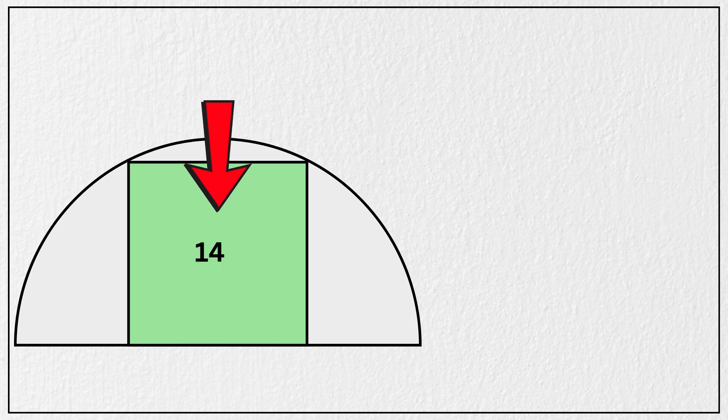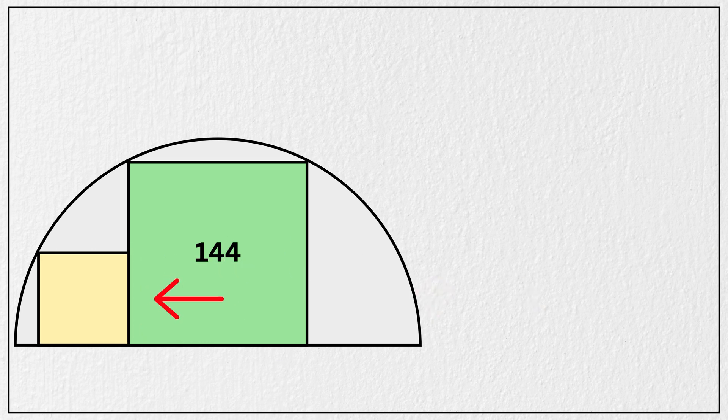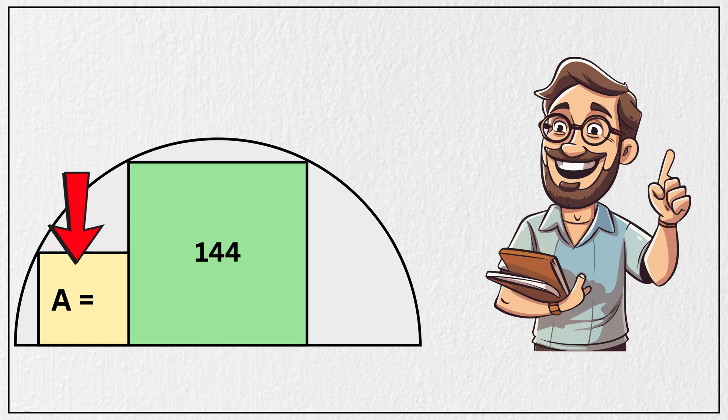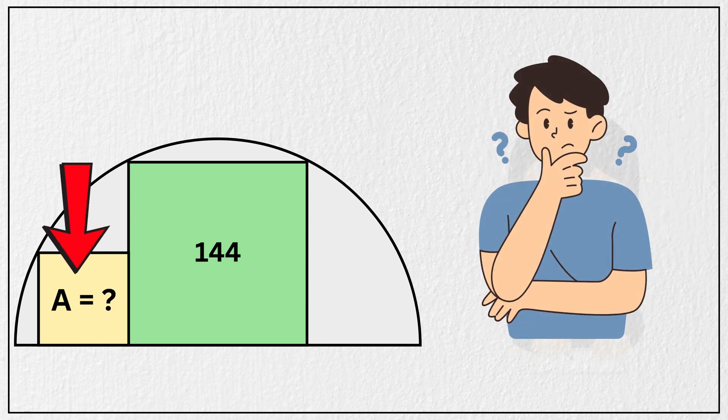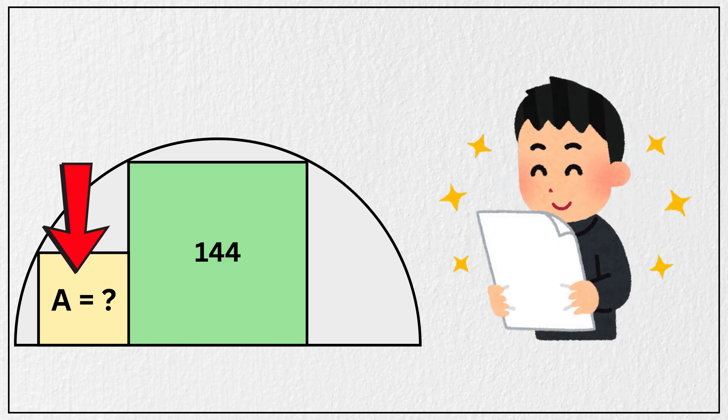The area of this square is 144 square units. To the left of it, there is another smaller square that touches both the large square and the arc of the semicircle just like this. And the question is, what is the area of this smaller square? You can pause the video and take a moment to think about it, and when you are ready, you can come back to verify your answer.